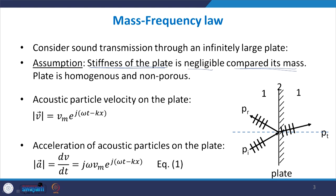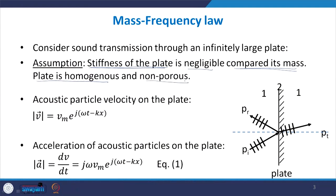If we are using a barrier material or a material for enclosure, then such hard materials obey this law — in that case the stiffness of the material is usually smaller compared to the mass — and the plate is homogeneous and non-porous. These are the assumptions we take.